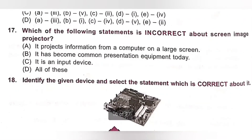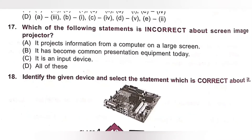Question 17: Which of the following statements is incorrect about a screen image projector? A. It projects information from a computer on a large screen — correct. B. It has become common presentation equipment today — correct. C. It is an input device — incorrect, because the screen image projector is an output device. Option C is the incorrect statement, so option C is the correct answer.